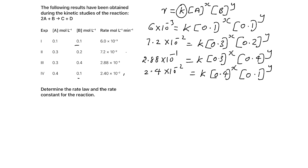So we have four equations — equation 1, equation 2, equation 3, equation 4. By choosing suitable equations, we are supposed to find X and Y. We can choose equations 2 and 3 for finding Y.